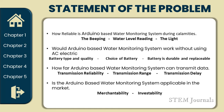For the statement of the problem, it is divided into four parts. First is the reliability of our device: the beeping sound, the water level reading, and the visibility of the light. Next is whether our device would work without AC electricity, including the battery type, quality, choice of battery, and battery durability. Third is how far our transmission range is, the transmission reliability, transmission range, and transmission delay based on distance. Lastly, if the Arduino-based device is applicable for the market, its merchantability and investability by the government.